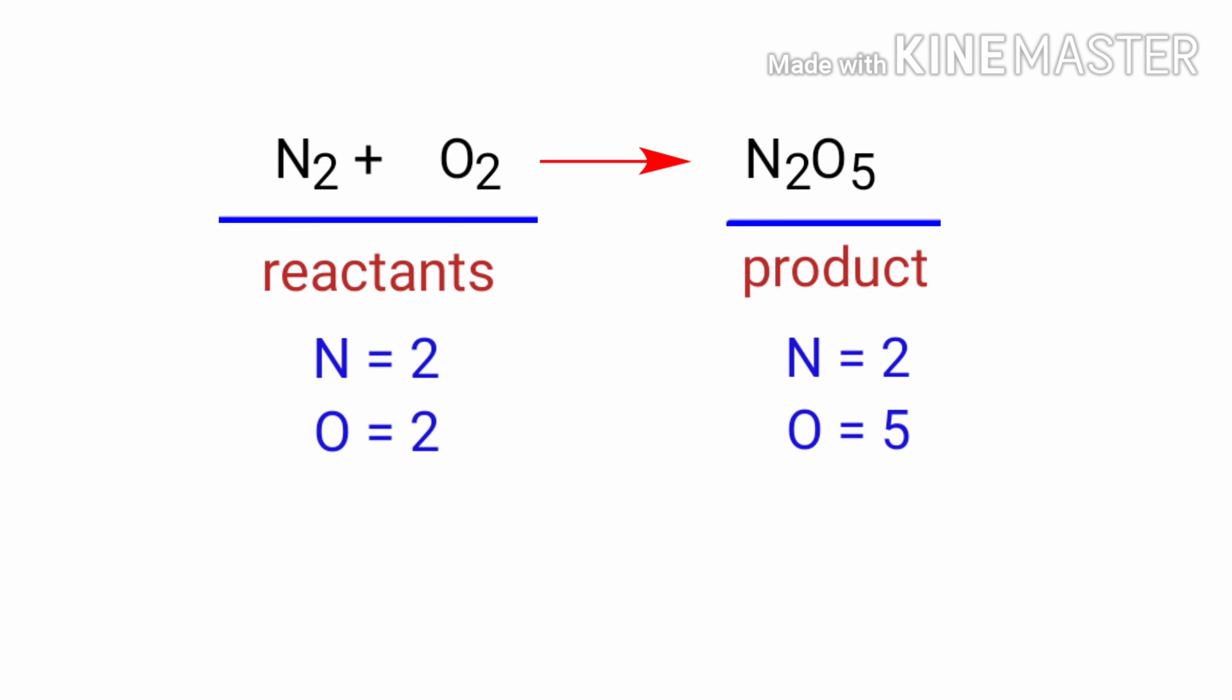If you look at this equation, the equation is not balanced. In the reactants side, there are two nitrogen atoms and two oxygen atoms and on the products side, there are two nitrogen atoms and five oxygen atoms. The number of atoms are not balanced on both sides.